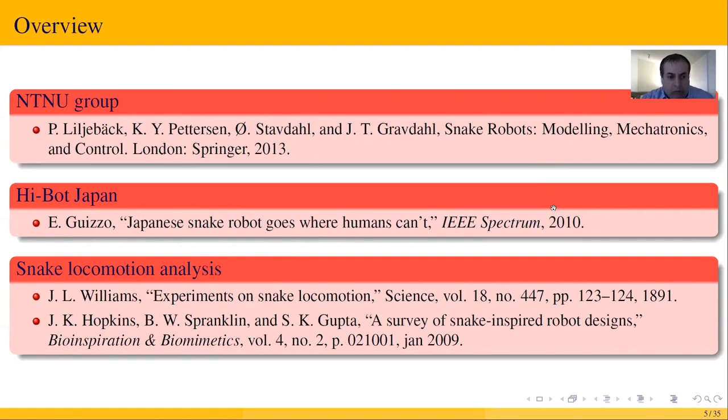For example, the work of Williams from one century ago about experiments on snake locomotion. And another example is the work of Hopkins, Professor Hopkins, Spranklin, and Rasa Gupta.